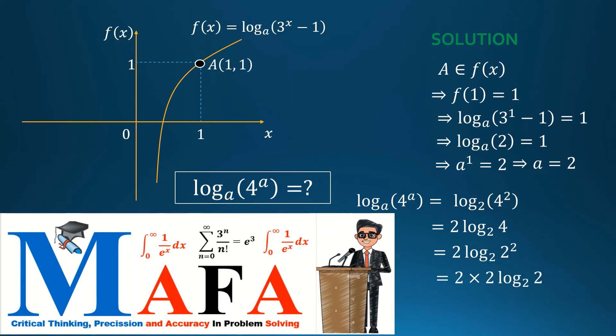We drop the power again, we get 2 times 2 logarithm to the base 2 of 2. The logarithm to the base 2 of 2 gives us 1, hence we have 2 times 2 times 1, and the response is 4.